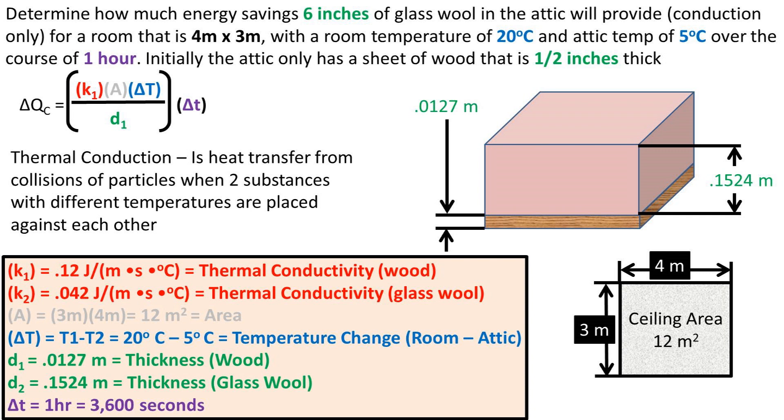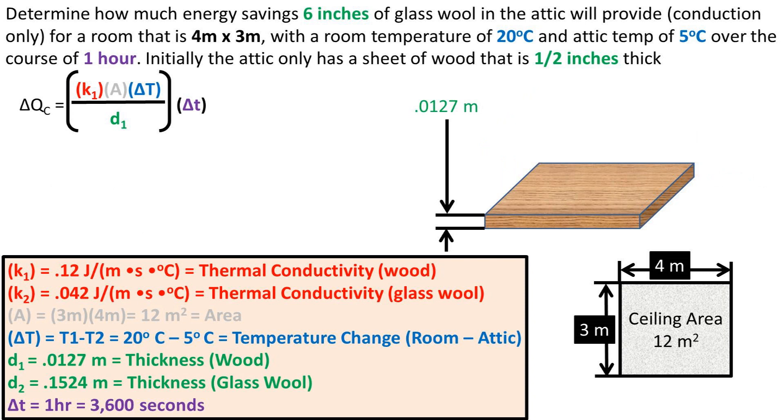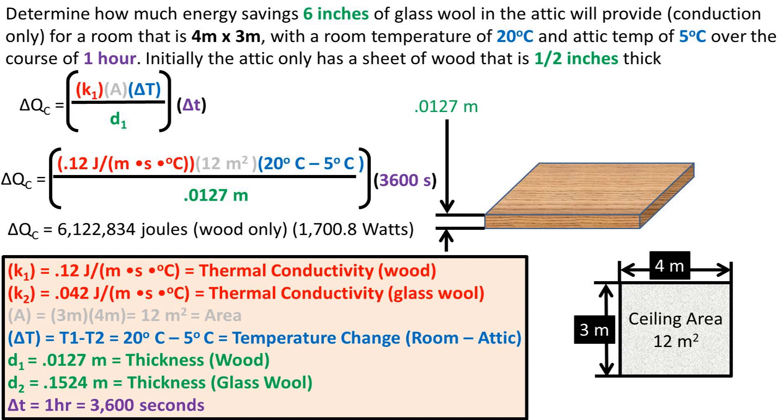How do we go about solving this problem? First, we need to solve for the heat lost without insulation, or with only the wood. We can plug all of our values into the equation, and we get a Q loss of 6.1 million joules. If we leave out the 3,600 seconds, we can get the answer in watts, which is 1,700.8 watts.